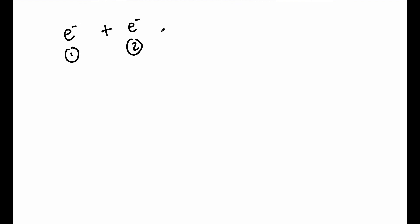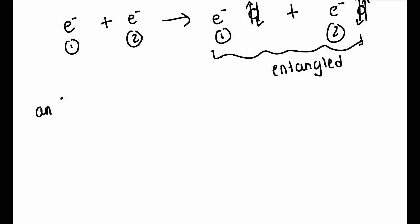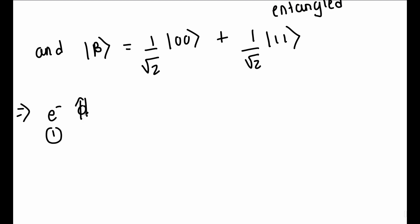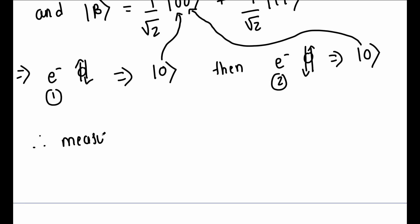A very interesting thing happens when pair of electrons are entangled. Suppose pair of electrons are in state ket beta 00, and if we measure the first electron and found it in state ket 0, then the other electron is also found in the state ket 0. It doesn't matter how far apart the two entangled particles are. Measuring one fixes the outcome of the other.